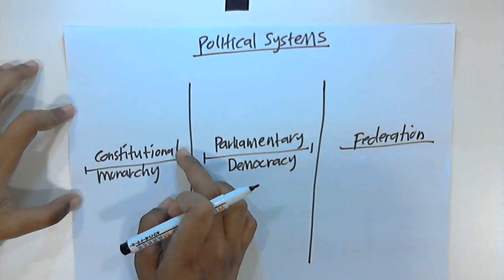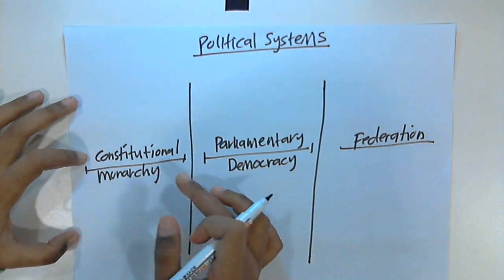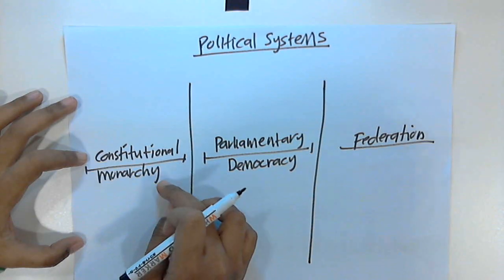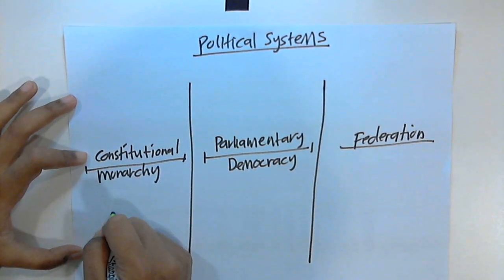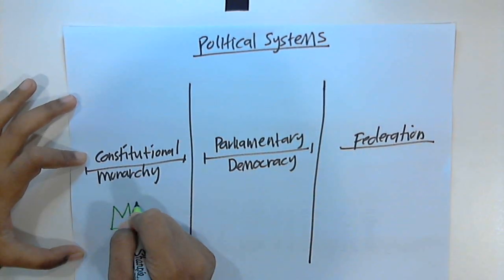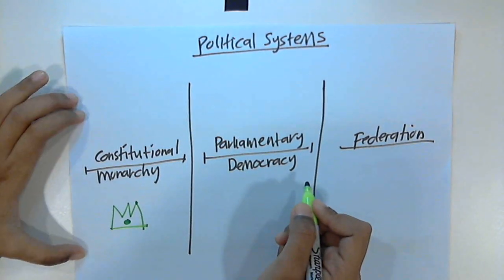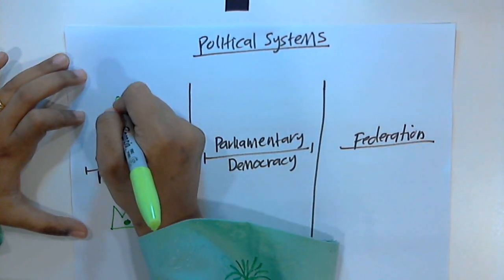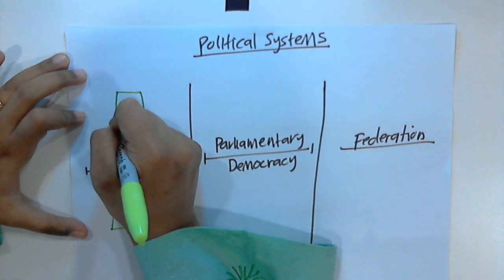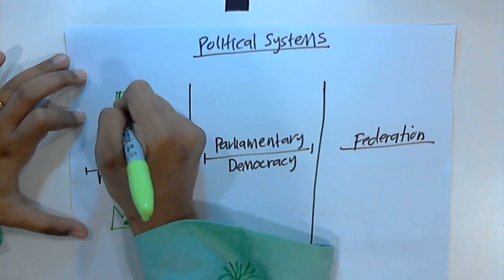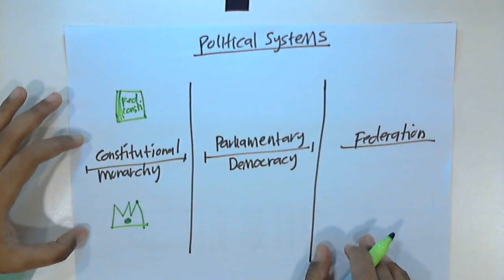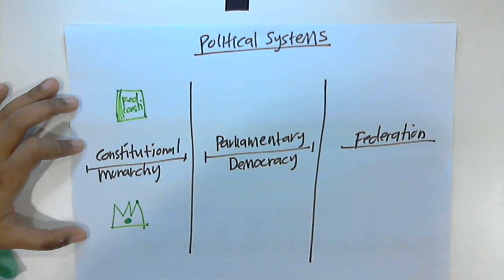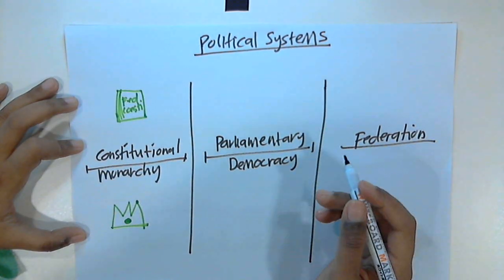The term constitutional monarchy obviously comes from two words: monarchy and constitution. So we have monarchy here, and we have constitution. Let me draw the federal constitution. Constitutional monarchy comes from these two words — monarchy and constitution. What does it mean?